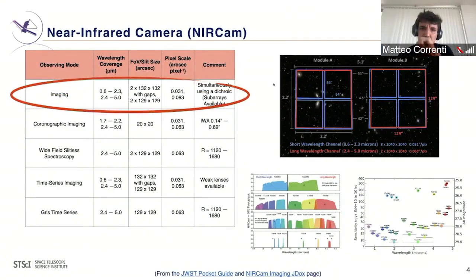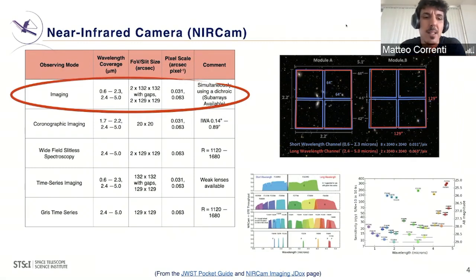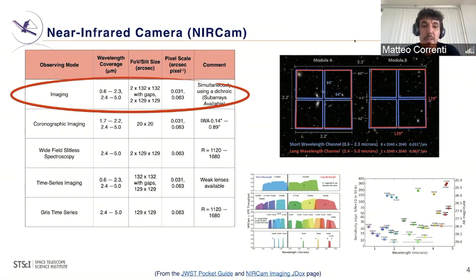We have a similar slide for NIRCam — the Near-Infrared Camera — so it covers shorter wavelengths than MIRI. It has four different modes: imaging, coronagraphic imaging, wide-field slitless spectroscopy, and a time series monitoring mode that can be imaging or spectroscopic. In this particular webinar we will concentrate on the imaging mode.